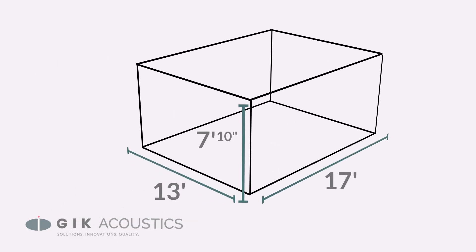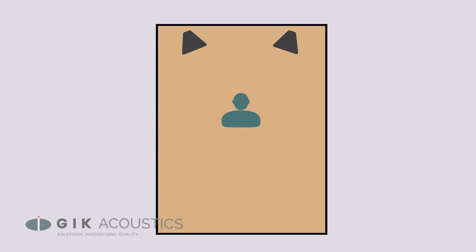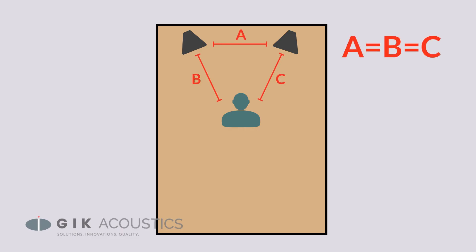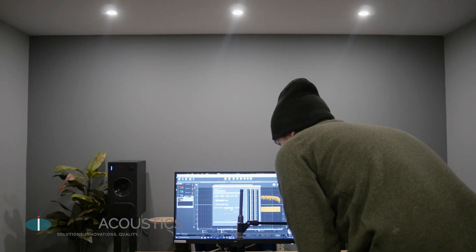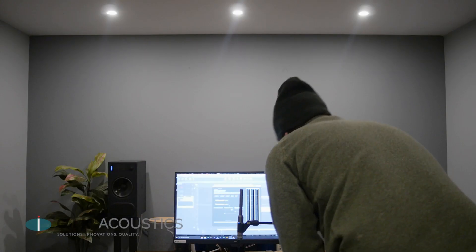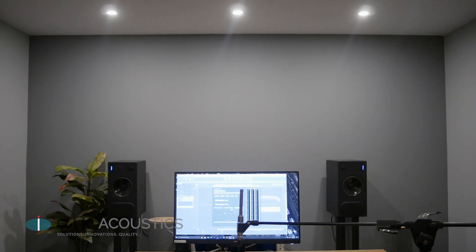The room we're working with is 17 feet by 13 feet, with ceilings just shy of 8 feet. We've set up the speakers along a short wall and set the listening position so it forms an equilateral triangle with the speakers. Let's run the Room EQ Wizard test and see what we get.